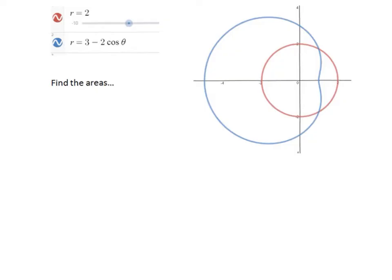First of all, finding areas. Remember, please, that the area of a polar is one half the integral of r squared d theta. That's what we've got to keep in mind all the time. Now, we're dependent after that on what area we're looking for.